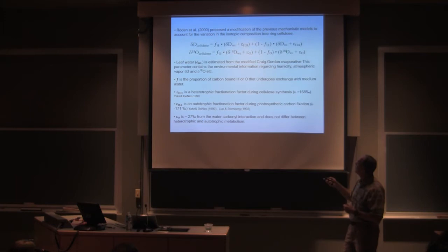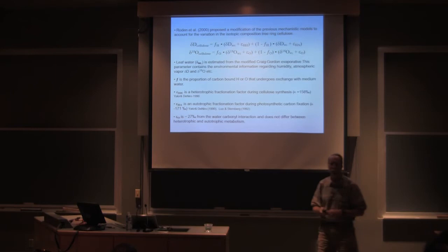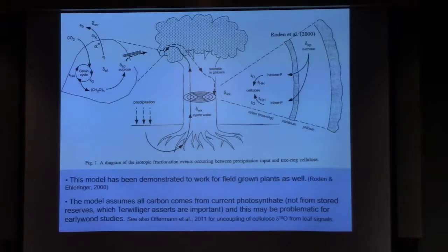And then, so this is the basics. I think the next slide will make it clear. It's more a cartoon. But finally, the oxygen here, this EO, is not different. Heterotrophic and autotrophic do not differ because they're all the same 27-per-mil water carbonyl thing. So that's one of the differences between carbon and oxygen.